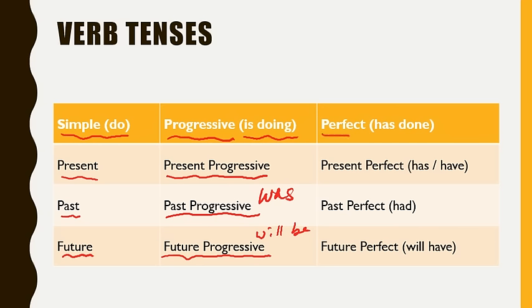Then, we have the perfect tenses and these are also present perfect, past perfect, and future perfect. But, these are the categories where we get into most problems. And so, we'll look at them more in detail in the future videos. What you want to remember is that the has and the have, when you say has done or have done, goes with the present perfect. And the had only goes with the past perfect.